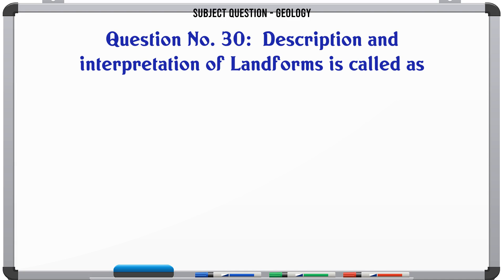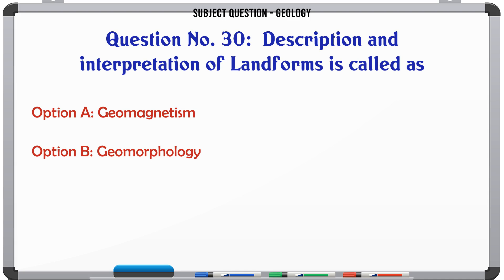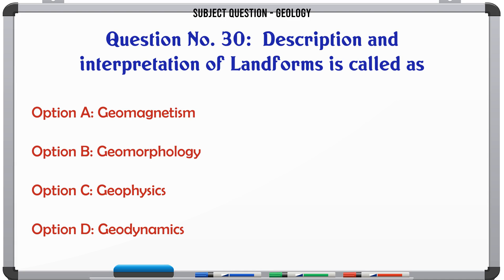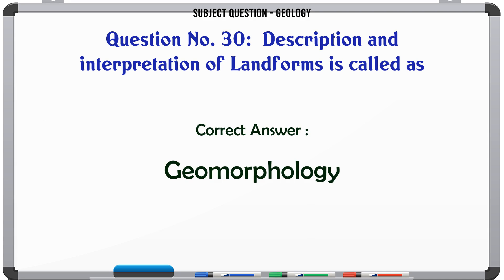Description and interpretation of landforms is called: A. Geomagnetism. B. Geomorphology. C. Geophysics. D. Geodynamics. The correct answer is Geomorphology.